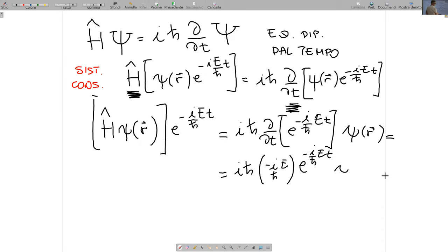E allora vedete quello che succede qui dentro? Qui dentro succede che meno i per i ho 1, quindi questo e questo si simplificano, H tagliato e H tagliato si simplificano. Quando vado a confrontare questo termine qui con questo termine qui, la parte dipendente dal tempo sparisce, perché si simplifica, e finisco con un'equazione che non dipende più dal tempo.